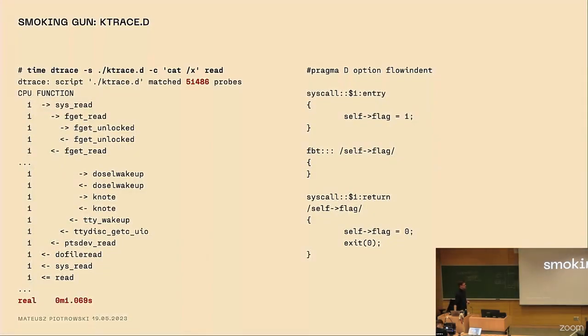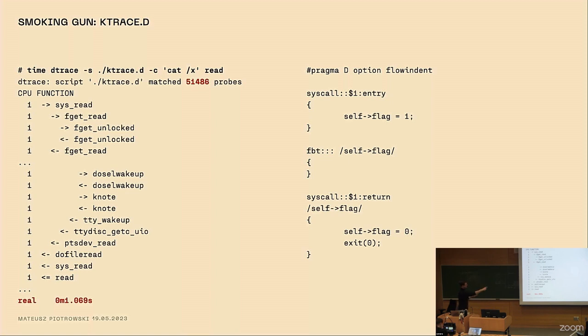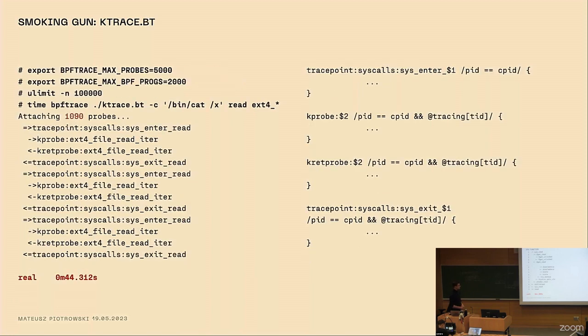So I did some experiments, and I found a smoking gun. You probably know the ktrace.d script, a script that allows you to select a system call, and then when someone calls the system call, you get a whole call path of what's happening until the moment the system call returns. It's very nice for exploring what's happening in the kernel. You can attach to over 50,000 probes, and it returns the results in around one second. So it's a very nice tool. It's easy to use. So I tried to port it to BPF.